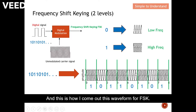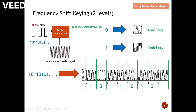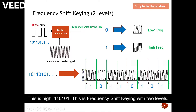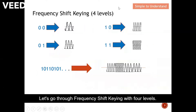This is how I arrive at the FSK waveform. If I receive this waveform I can tell the message — high frequency means one, low frequency means zero. So the message reads: 1, 0, 1, 1, 0, 1, 0, 1. This is frequency shift keying with two levels.